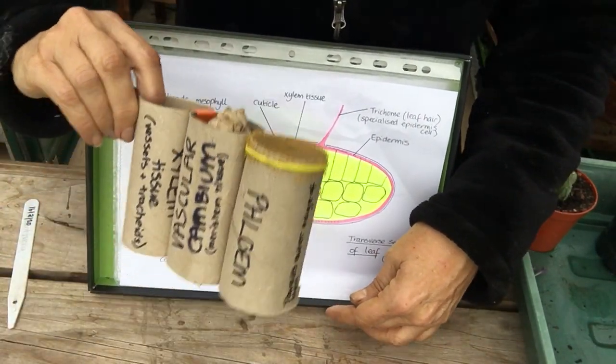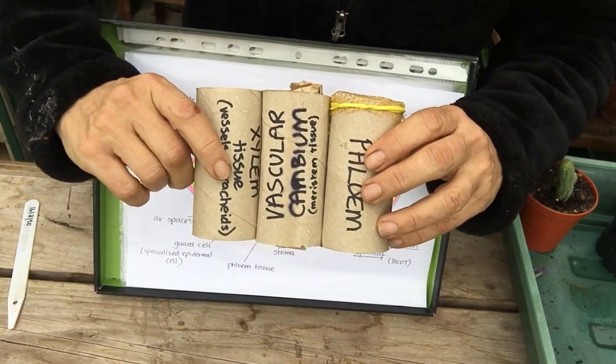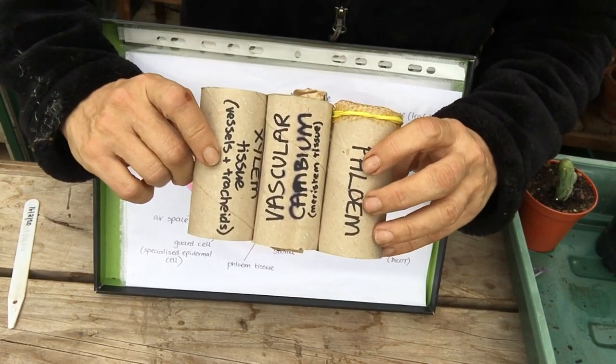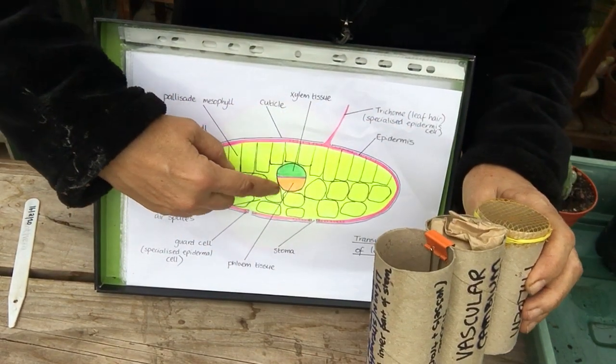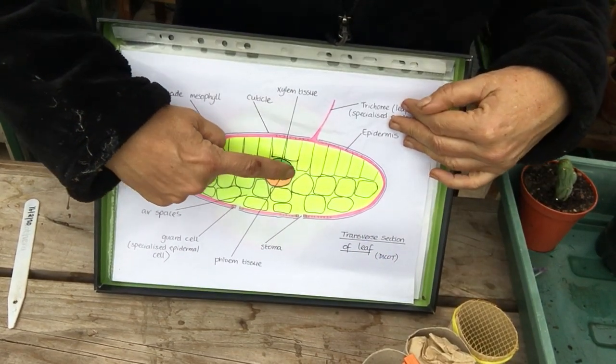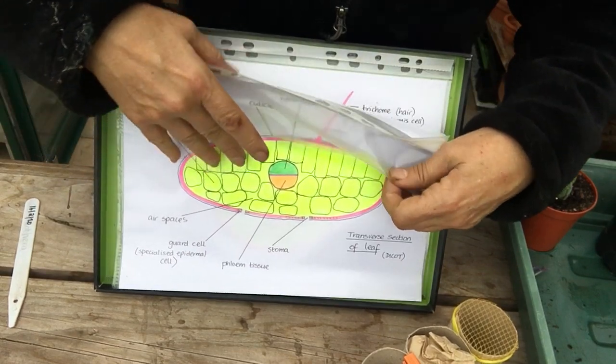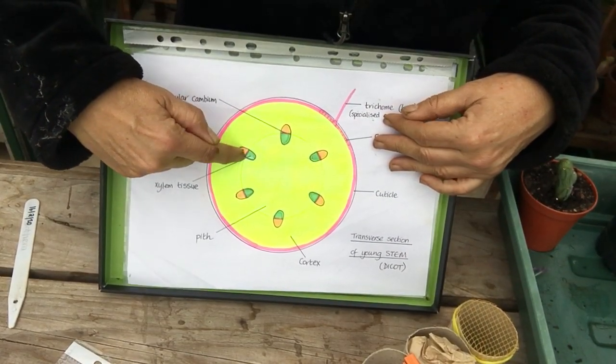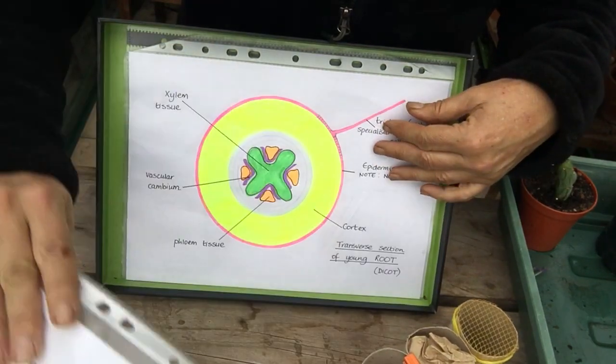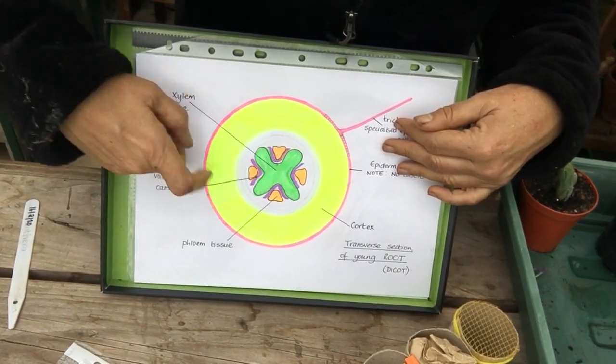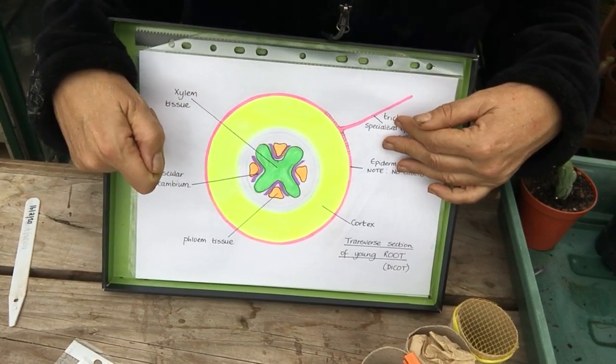Our final lot of tissue is we're going to look at transport tissue and meristematic tissue together. So here we have on our leaf we've got our phloem and our xylem with the meristematic tissue between. On our stem we've got phloem and xylem with our meristematic tissue in between, and on our root we've got phloem and xylem with our meristematic tissue in between.